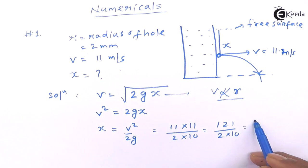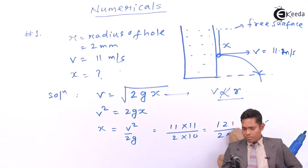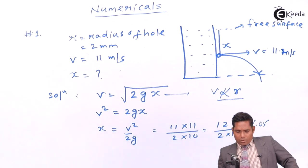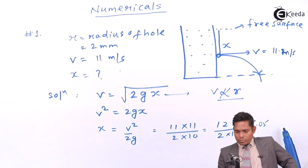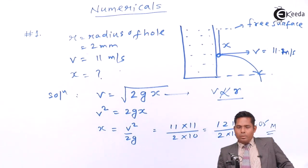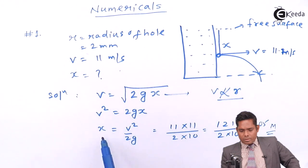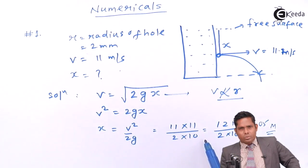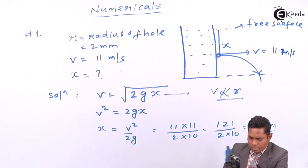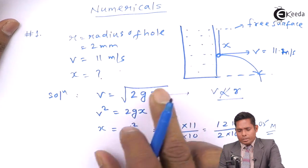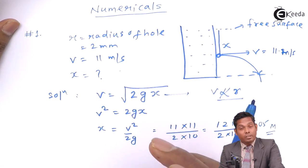Something like that comes down to 6.05. So this is the answer to this question. You can take g as 9.8 and you will get some other answer, but it's okay. You can always put g equals to 10 if it is not mentioned. If it is mentioned, then you put 9.8. So this is the answer to this question that if a hole is made, then you use this formula.